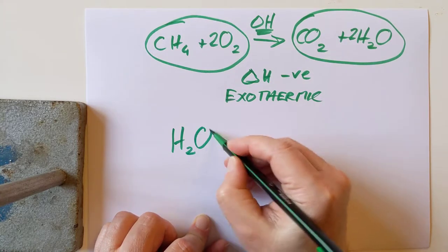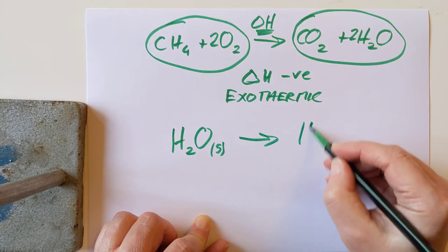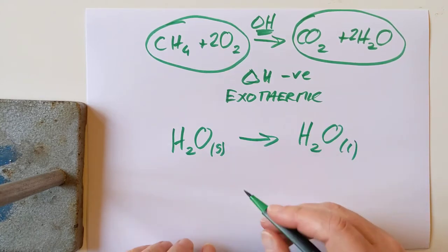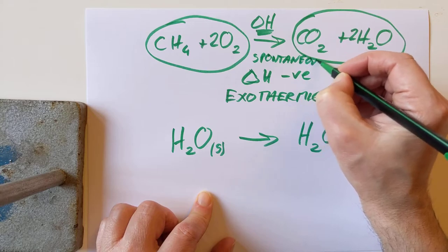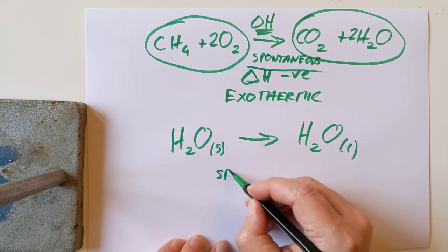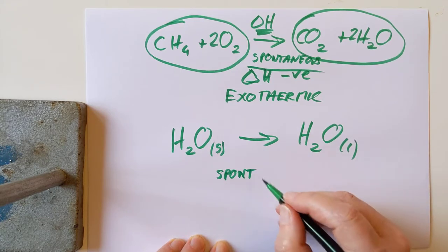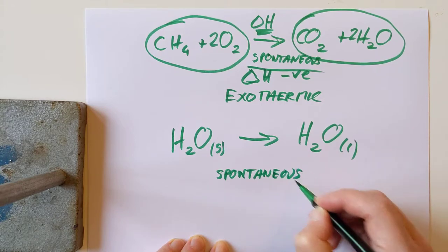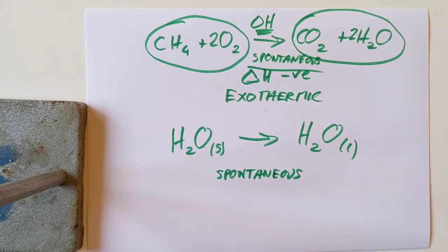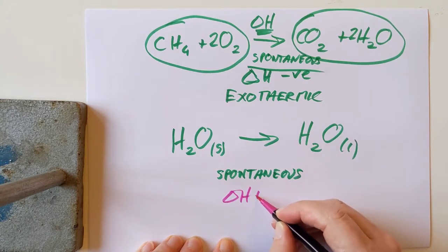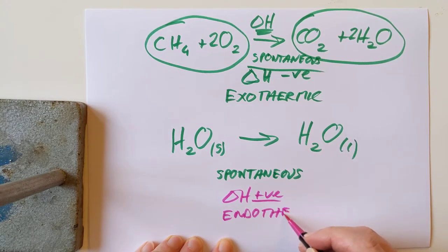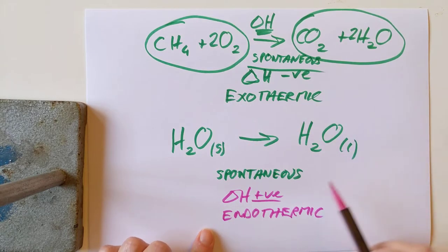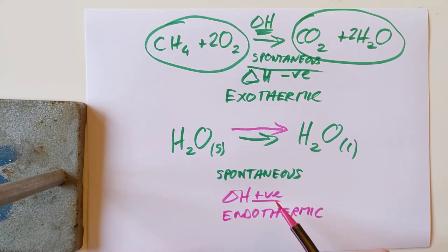If H2O solid going to H2O liquid is spontaneous, and delta H is positive for this reaction, it is endothermic. So why does it happen by itself? There must be something that we are not aware of so far that's driving this reaction. And this leads us on to my third topic of entropy.